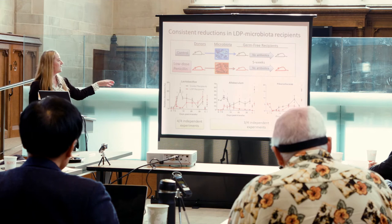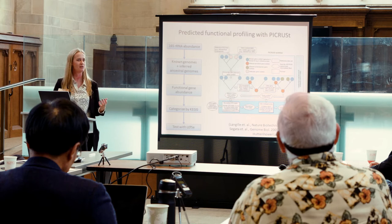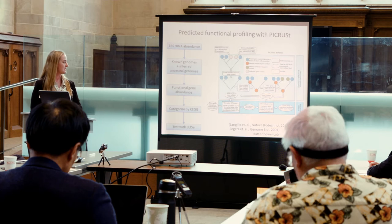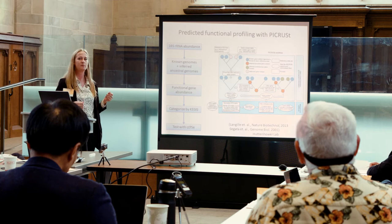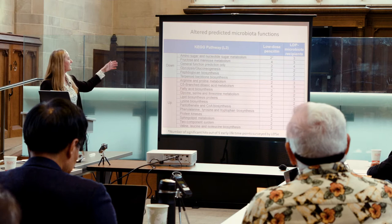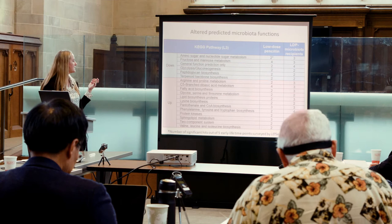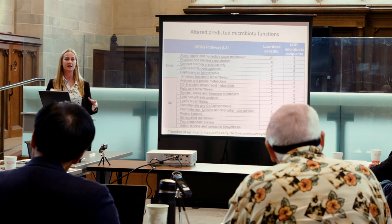From the 16S data we also wanted a bigger insight into function — we can see names changing, but what are they actually doing? We used PiCrust from Curtis Huttenhauer's lab, which constructs a metagenome from 16S data. We see a big downregulation in many functions related to carbohydrate metabolism — fructose, glycolysis — and decreased cell wall peptidoglycan biosynthesis. We also see upregulation in many pathways related to amino acids and lipids. This suggests we didn't just change the microbes, but changed the metabolic output of the gut microbiota.